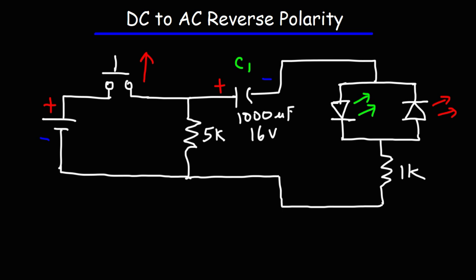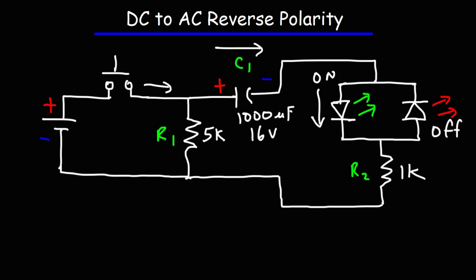Here is an experiment that will demonstrate this phenomenon. R1 is a 5 kilohm resistor. R2 is a 1 kilohm resistor to limit the amount of current flowing through the LEDs so that the battery doesn't burn them out. C1 is a 1000 microfarad 16 volt capacitor. When the switch is closed, current is going to flow from the battery charging C1, and the green LED will be in forward bias mode so it's going to be on, whereas the red LED is in reverse bias mode so it's off. The green LED will stay on until C1 has been fully charged by the battery.